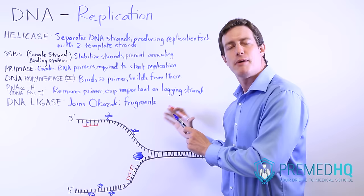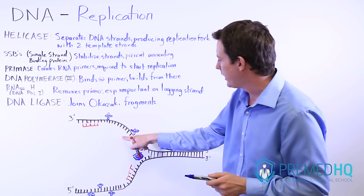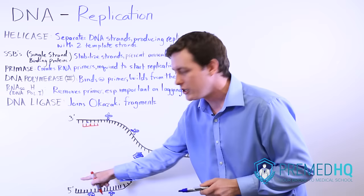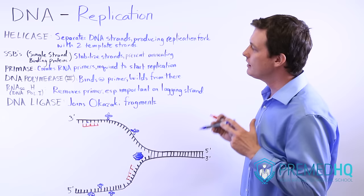Remember that the directionality of replication is read 3' to 5' and write 5' to 3'. When polymerase is reading from the template strand, it reads in the 3' to 5' direction. The primer placed here will allow replication to continue in one direction, and the primer on the other strand — where this is the 3' end and that is the 5' end — will allow replication to continue in the opposite direction. Replication always starts at the 3' end and moves toward the 5' end of the template strand.